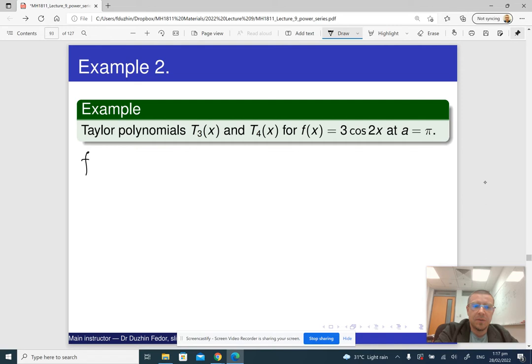So the function itself, let me just write f. f is going to be 3 times cosine of 2x. Then its first derivative is going to be, well, 3 times 2 is 6. Derivative of cosine is minus sine, so minus 6 sine 2x.